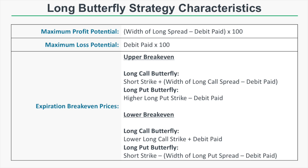The upper break-even price of a long put butterfly is the higher long put strike price minus the debit paid. For the lower break-even prices: a long call butterfly's lower break-even is the lower long call strike price plus the debit paid. For a long put butterfly, the lower break-even is the short strike minus the width of the long put spread minus the debit paid — essentially the short strike minus the max profit of that long put spread.